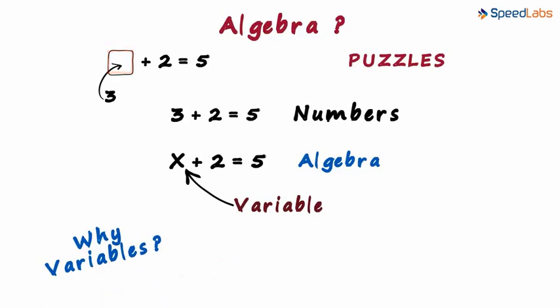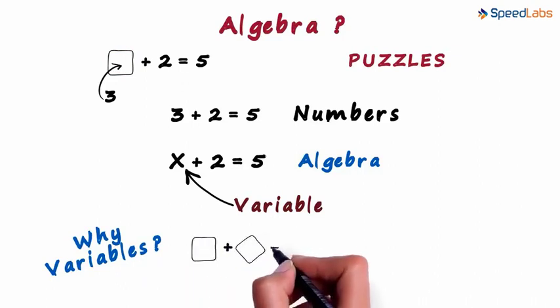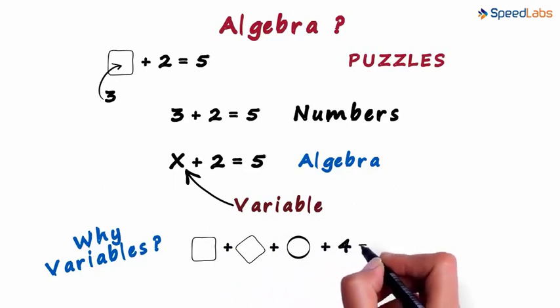Let's assume there are 3 unknown numbers. Using shapes, we can write it as a square plus a slant square plus an empty circle plus 4 equals 7.